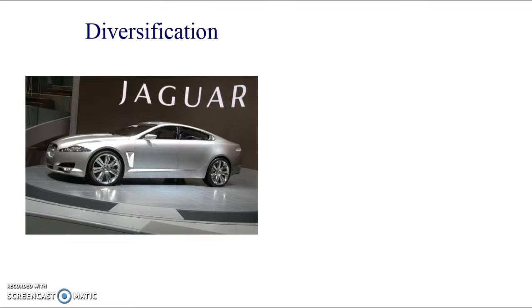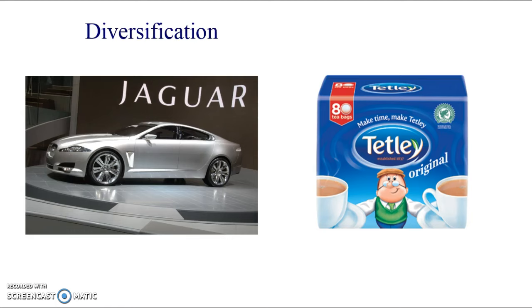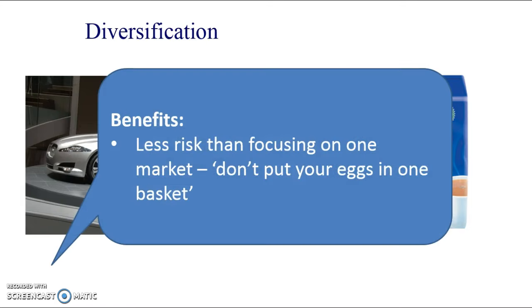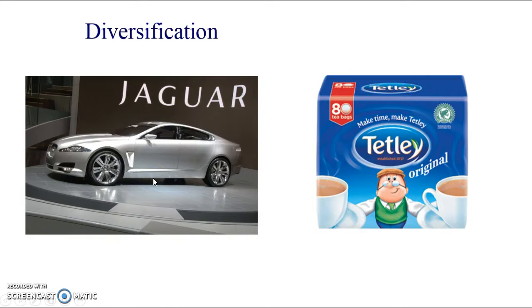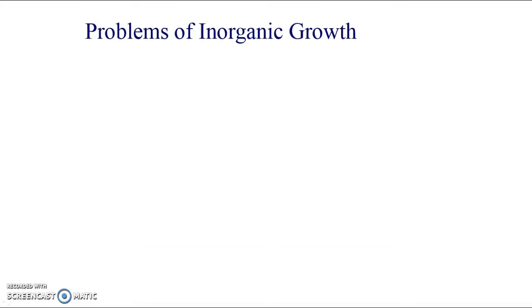For diversification: did you know the owners of Jaguar Land Rover also own Tetley Tea? Very different products, in no way related to each other. They're all owned by Tata, an Indian firm that owns businesses in many different industries. One of the benefits of diversification is it's less risky than focusing on one market - don't put all your eggs in one basket. If the automotive industry or the luxury car market faces decline, they're still in the tea market. We don't know what transport will look like in the future with self-driving cars and so on.